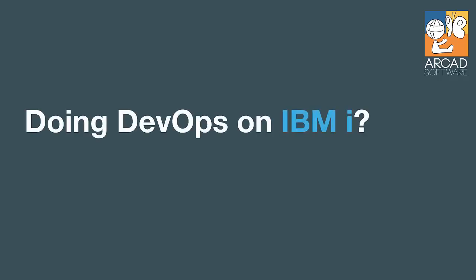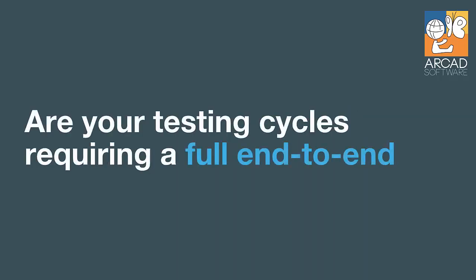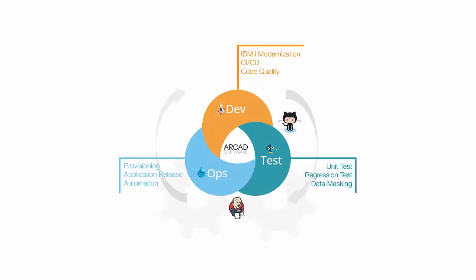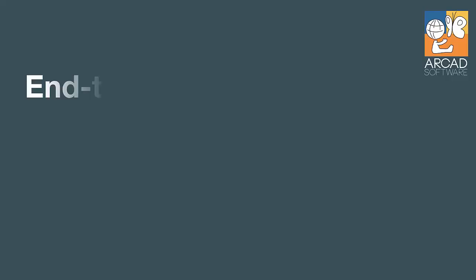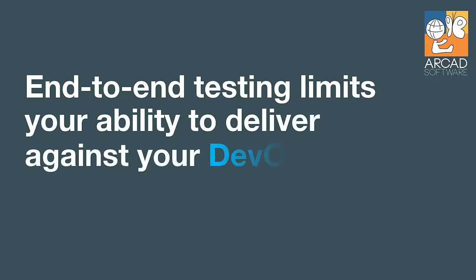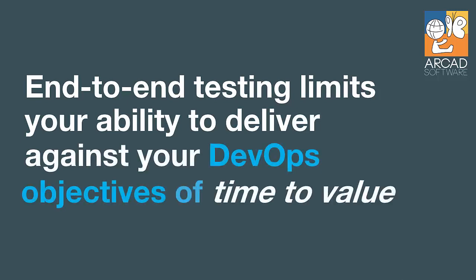Are you already doing DevOps and IBM i, but your test cycles are long and costly with an end-to-end test for each and every change? In this video we'll look at how to optimize your existing end-to-end testing tools with a data-oriented solution for IBM i. With backend applications on IBM i, the UI-based end-to-end tools create a bottleneck that can block your DevOps objectives of rapid and frequent delivery.